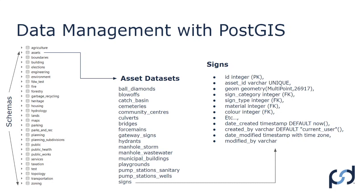PostGIS allows you to create additional spatial data types within the database. We'll create a geometry field for a multipoint, and 26917 is the EPSG number — UTM zone 17 north. Then we have a bunch of foreign keys: sign category, sign type, material, and color. These are foreign keys because we have separate lookup tables storing those categories, and we insert just the integer ID from those tables rather than the text value itself — same for sign type, material, color, and any other attribute fields.